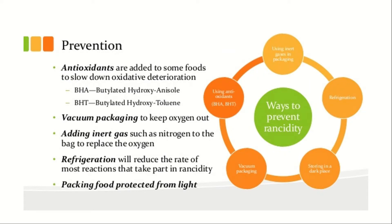Each and every problem has its own solution. In the same way, there are methods to prevent rancidity. Antioxidants are added to some foods to slow down oxidative deterioration, such as BHA and BHT. Vacuum packaging is used to keep oxygen out. Adding inert gases such as nitrogen to the packaging replaces oxygen. Refrigeration reduces the rate of most reactions that take part in rancidity. Packaging food to protect it from light also helps. These are various ways to prevent rancidity.